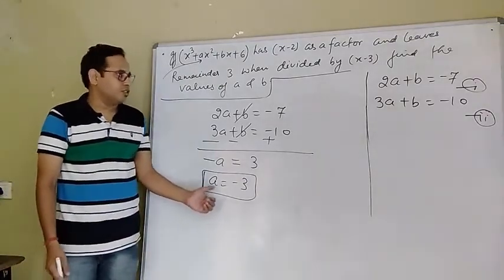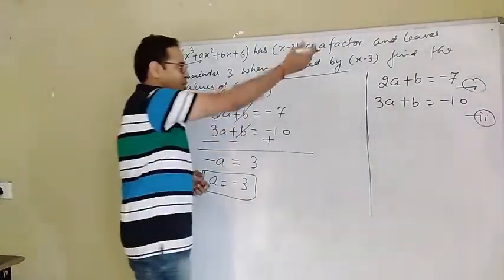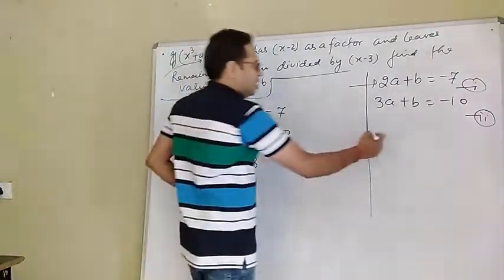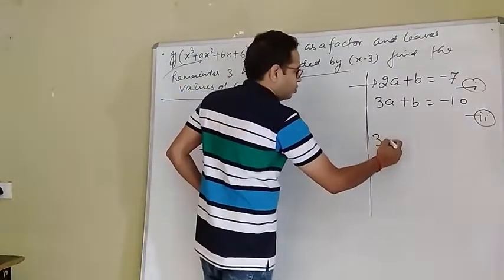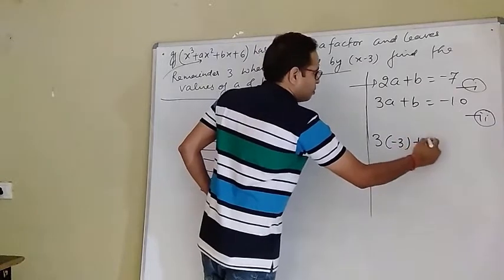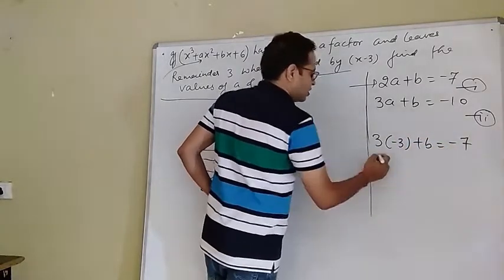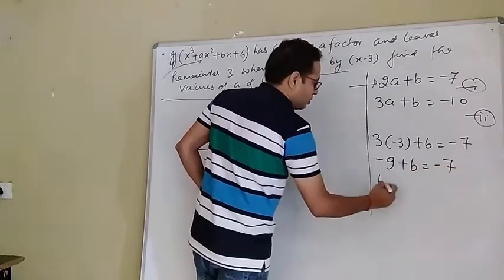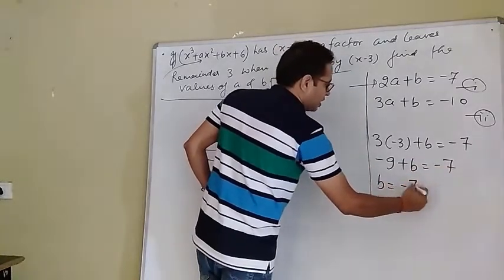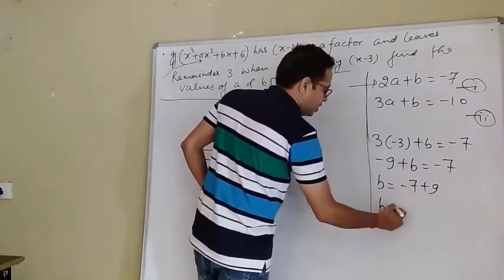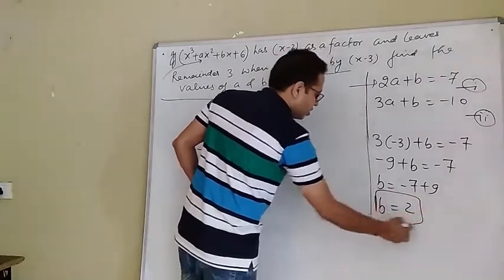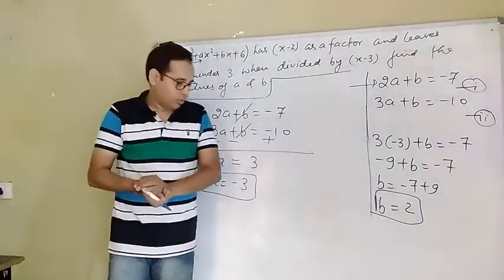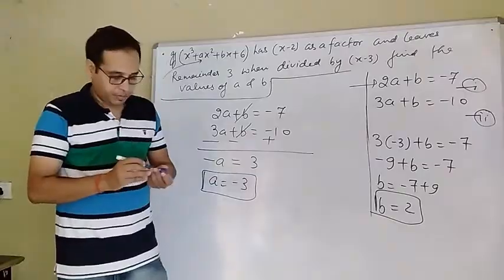So a = -3. Now substituting a = -3 into equation 1: 2(-3) + b = -7, so -6 + b = -7, or b = -7 + 9 = 2. Therefore the value of a is -3 and b is 2.